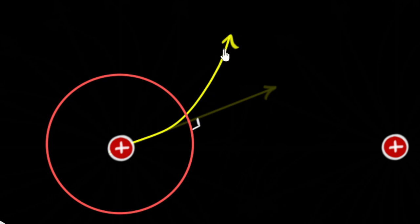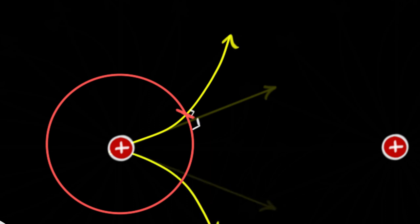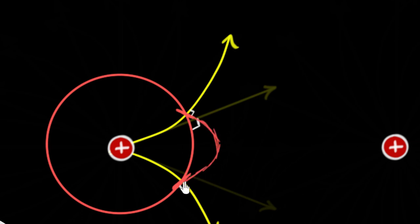But now, once the field line has curved, the original equipotential surface is no longer perpendicular to it. To make this perpendicular again, this part of the equipotential surface must bend somewhat like this — and then it'll be 90 degrees again. The same thing would happen downwards. If I draw one more field line over here, this part of the equipotential surface should also bend to maintain that 90-degree angle. So you can kind of see that the new equipotential surface would be bulged out towards that other positive charge.